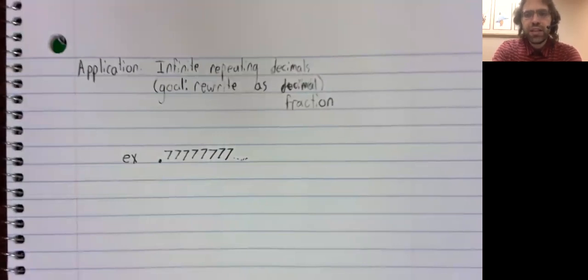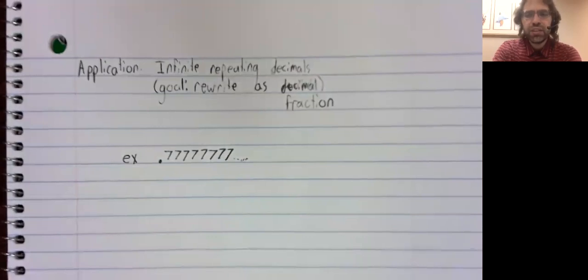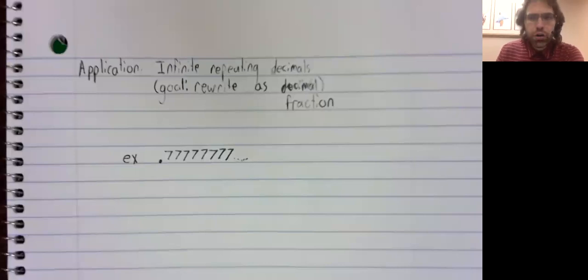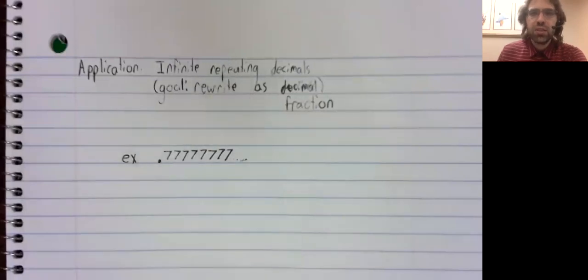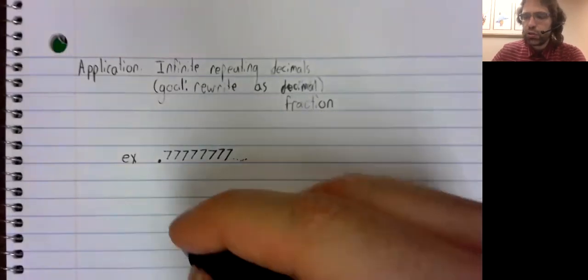I mean, any decimal can be rewritten as an infinite series, but an infinite repeating decimal can be rewritten as a geometric series.